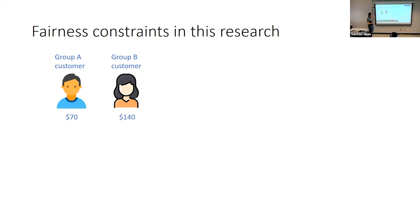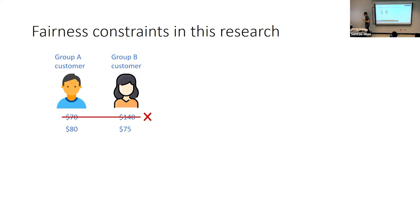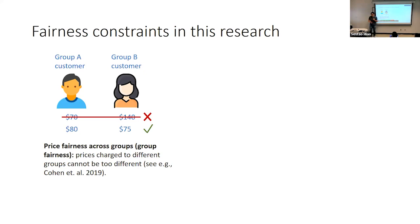Let me give a high-level idea of the fairness constraints we consider. In traditional price discrimination, a customer from group A is charged $70 and from group B is charged $140 for the same product. That is not acceptable. If we charge $80 for group A and $75 for group B, although there is still a slight difference, customers find it more acceptable. This is the first type: price fairness across groups, or group fairness — the prices charged to different groups can differ, but not by too much.